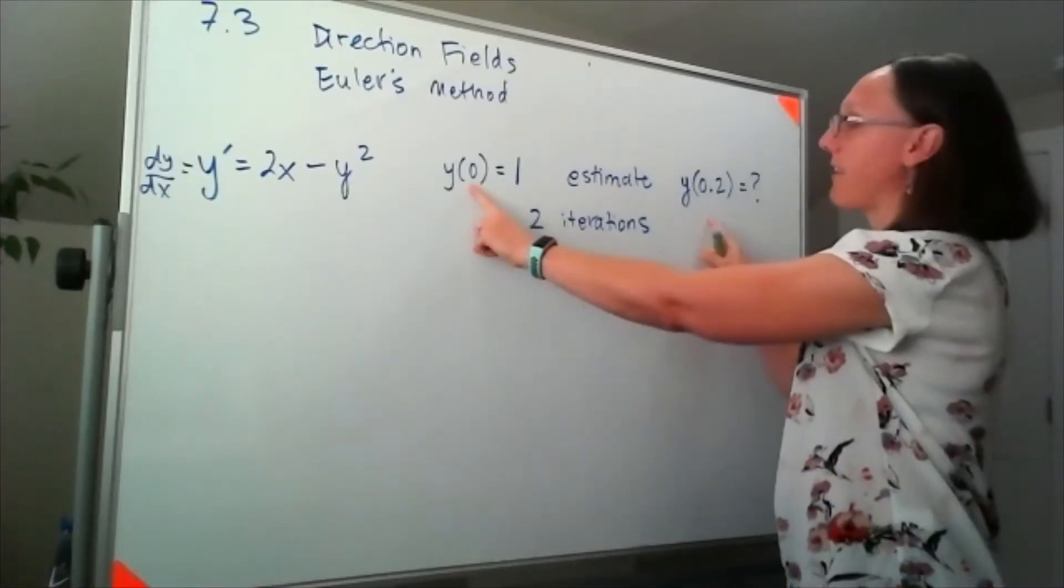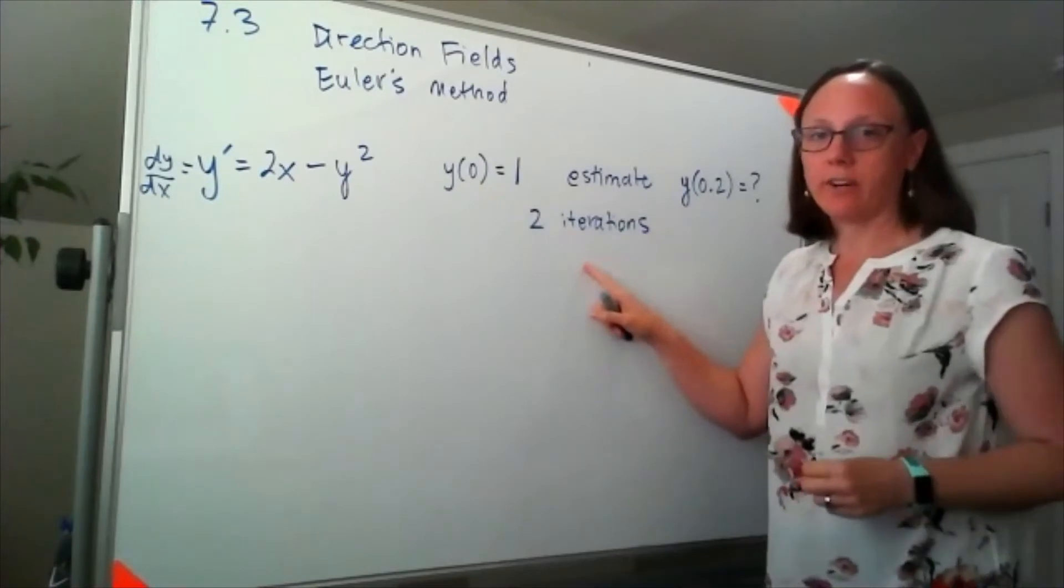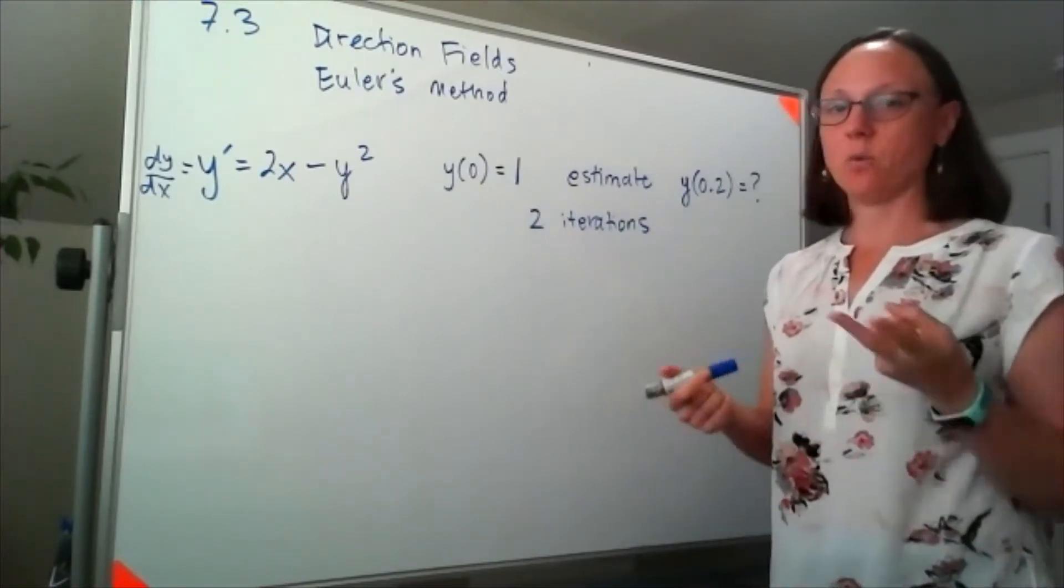That means that I've moved from an x-value of 0 to an x-value of 0.2, and two iterations means I have to do that in two steps.